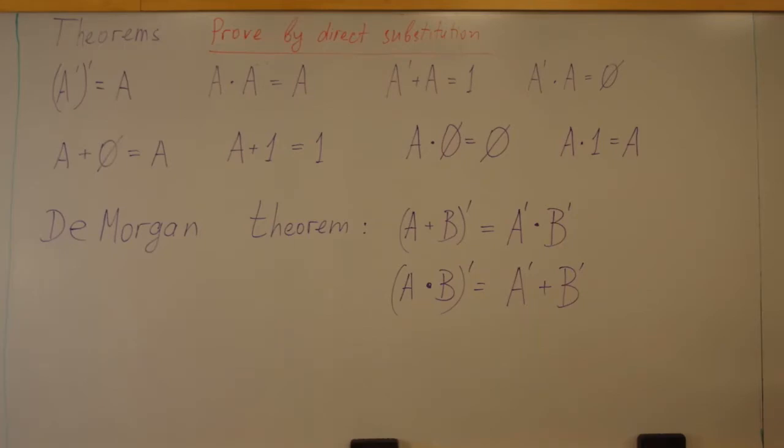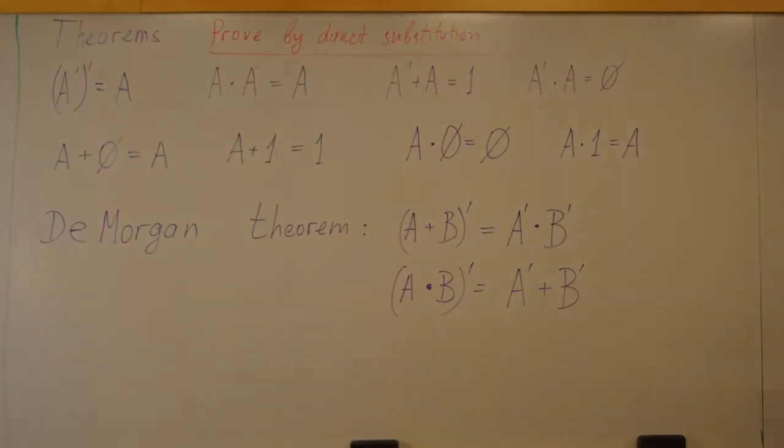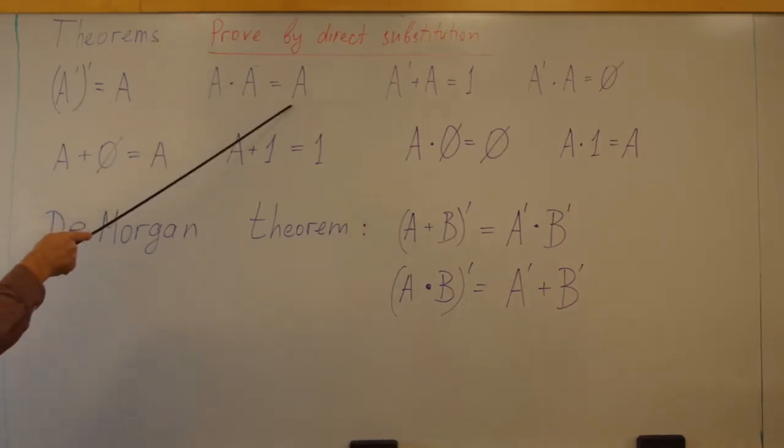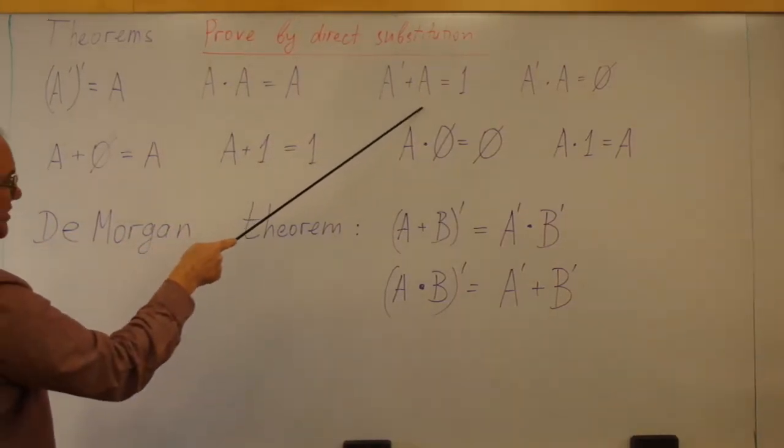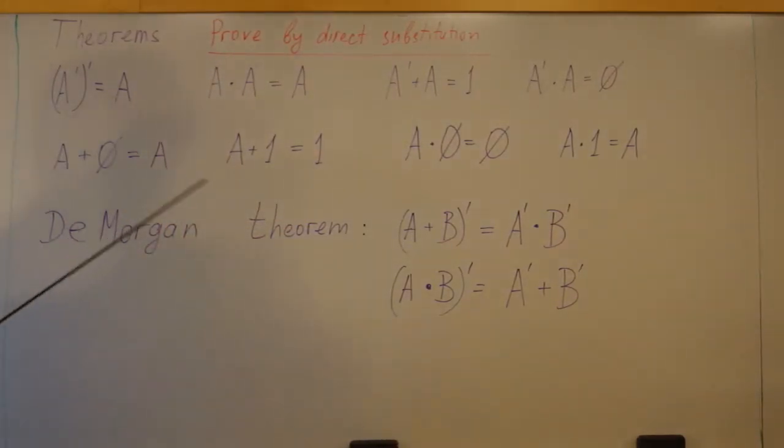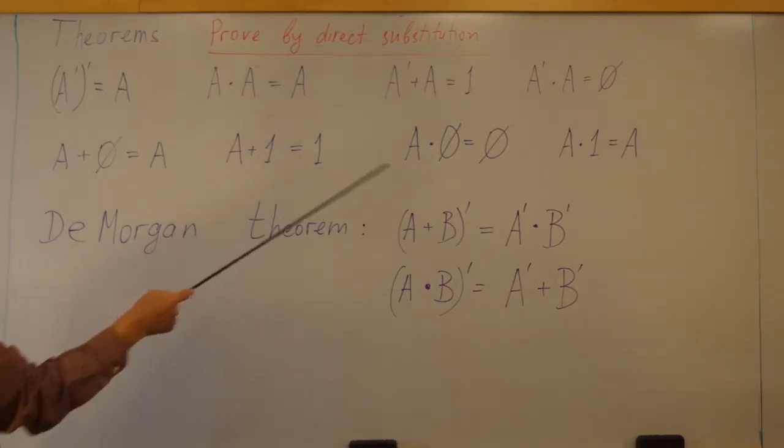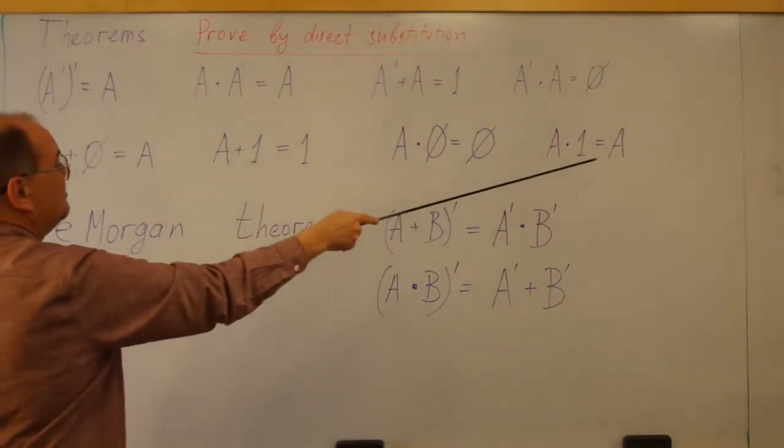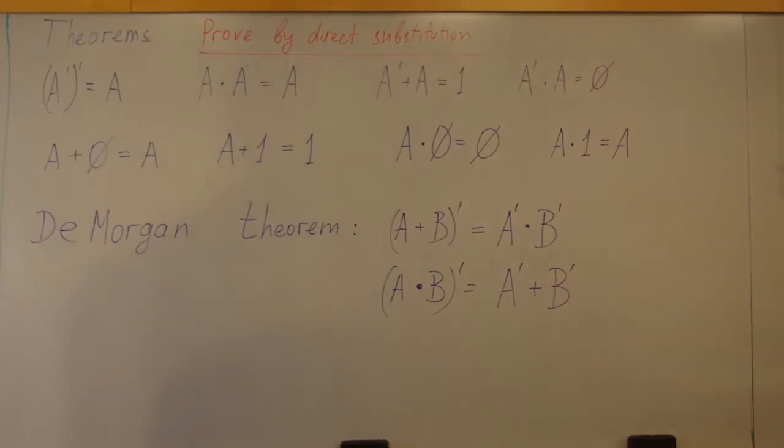Just like conventional algebra, Boolean algebra has its own theorems. Fortunately, Boolean algebra deals only with two elements and two operations. So these theorems can be easily proven just by direct substitution. I am leaving this proof for you and only listing these theorems: Inverse of inverse is the same. Variable multiplied by itself gives the same variable. Inverse A plus A gives us 1. Inverse A times A gives us 0. A plus 0 returns A. A plus 1 returns 1. A times 0 returns 0. A times 1 returns A. These theorems are usually very well understandable.